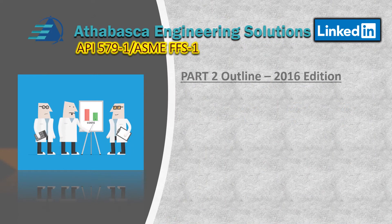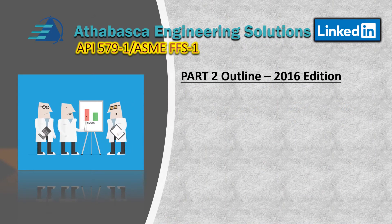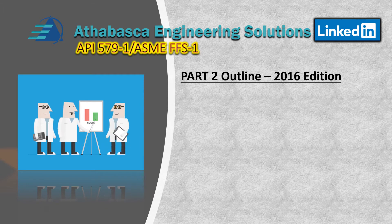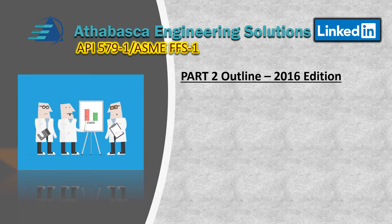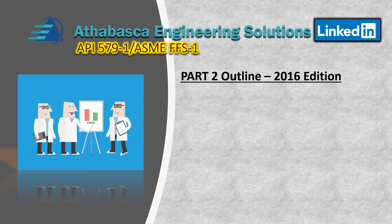Welcome again to our program. In this video, we are going to talk about Part Two of API 579. Part Two is what I nickname the roadmap — it basically provides some groundwork definitions and the philosophy of how it's structured, and an introduction to the remaining parts, which pertain to the flaw mechanisms.